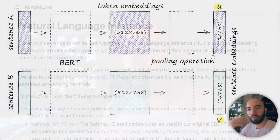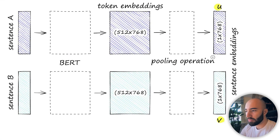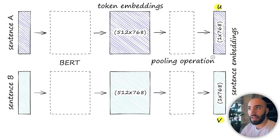So we're just going to go through it, we're not going to go into too much depth. When training these models, we can either use what is called a Siamese network or a triplet network.